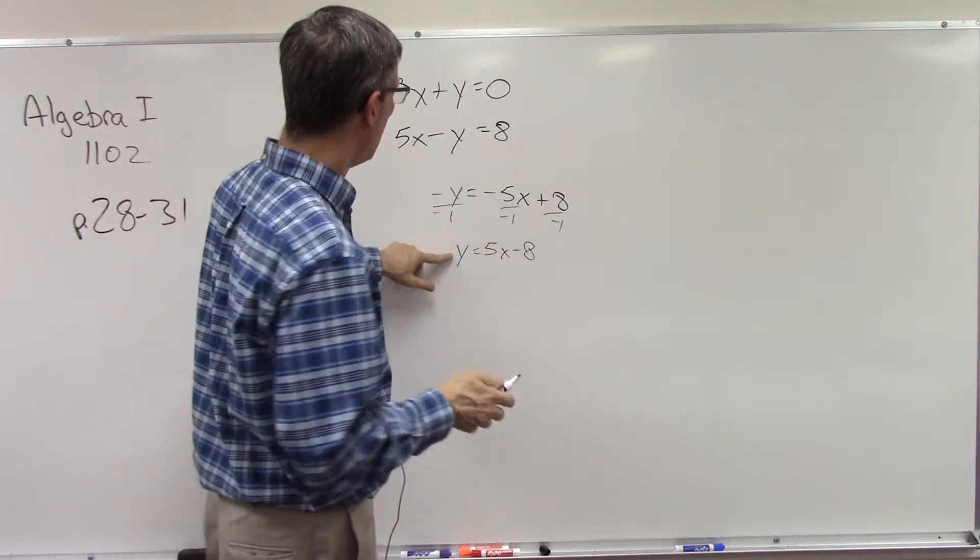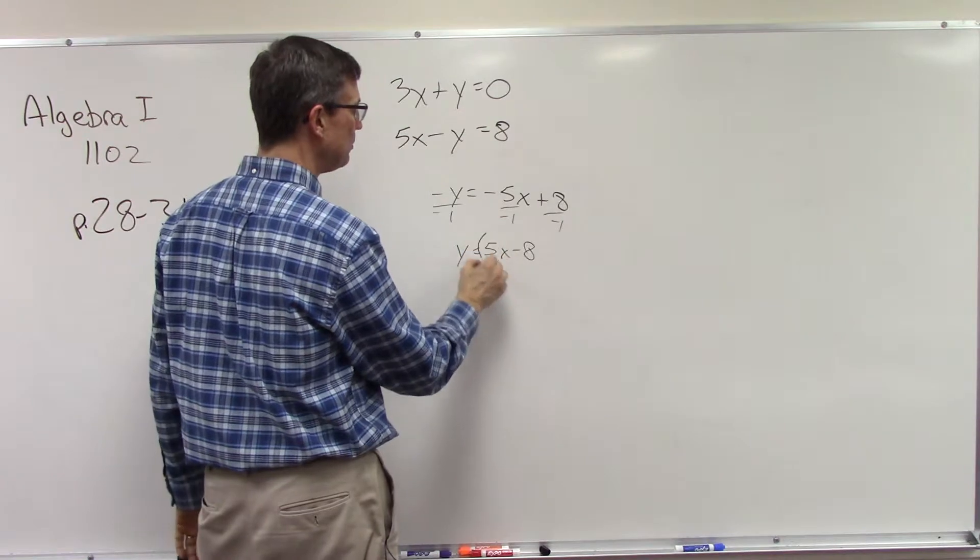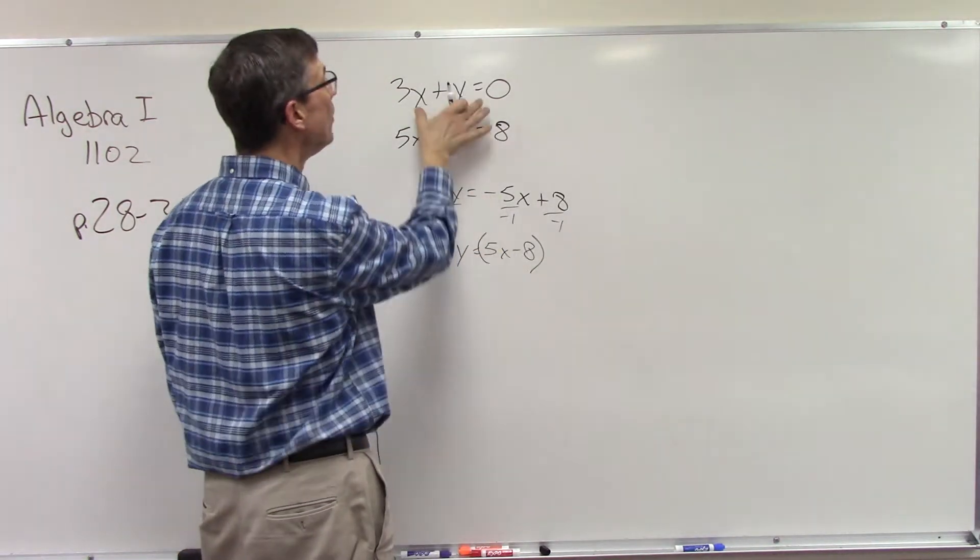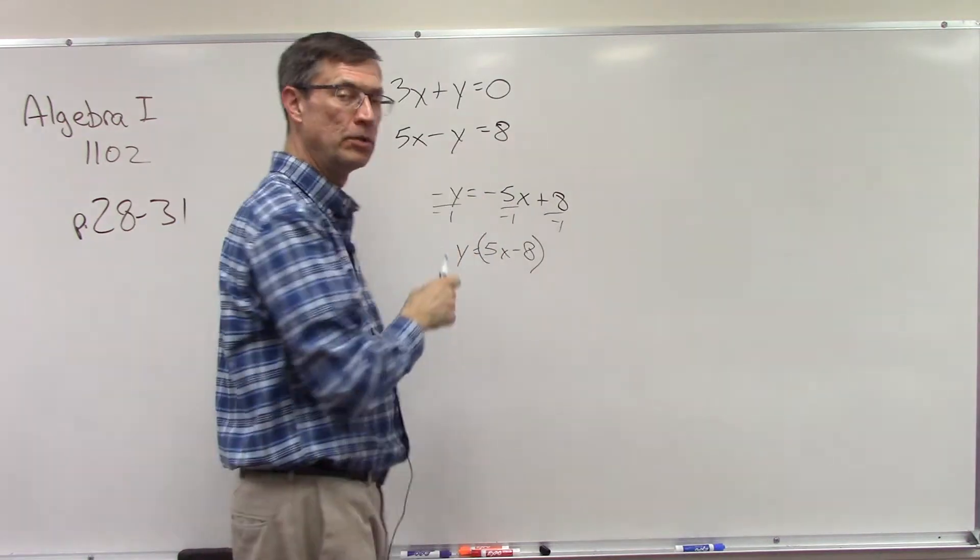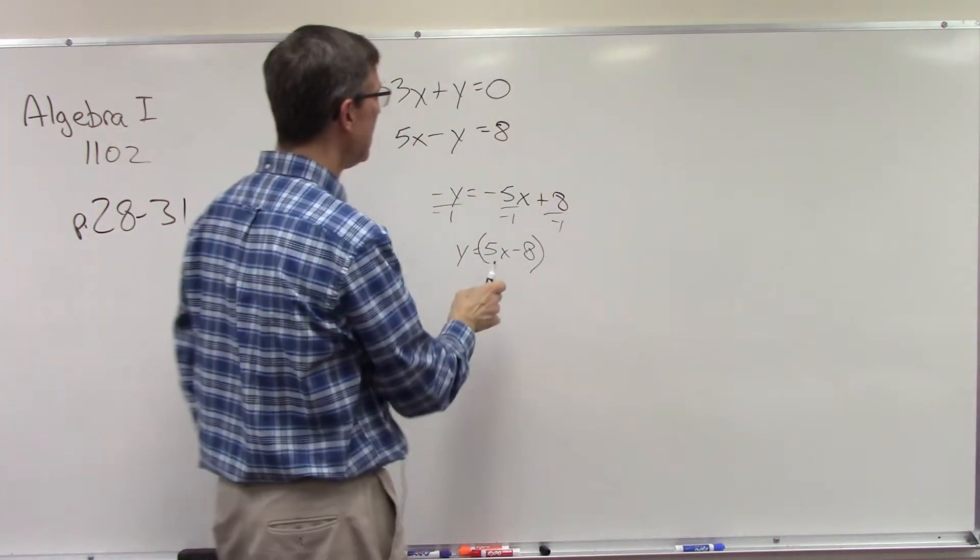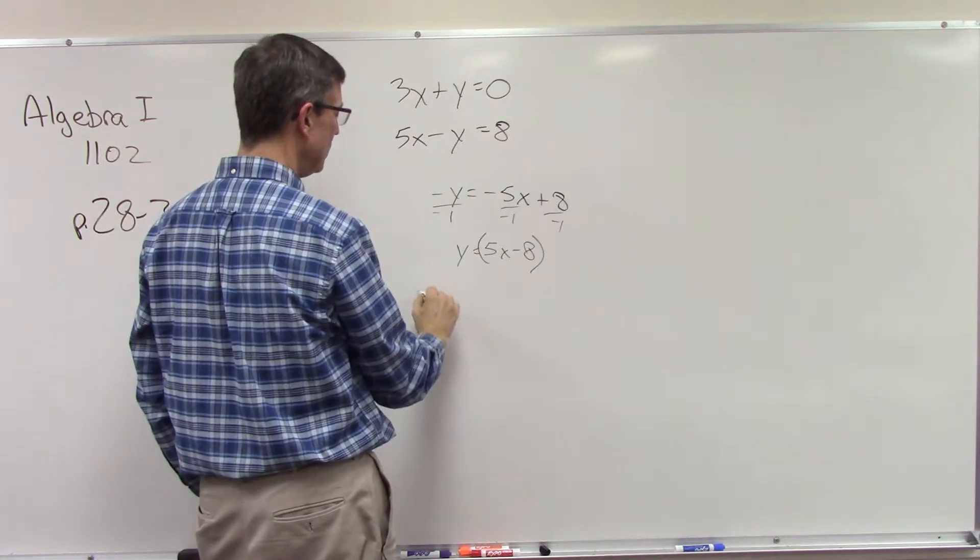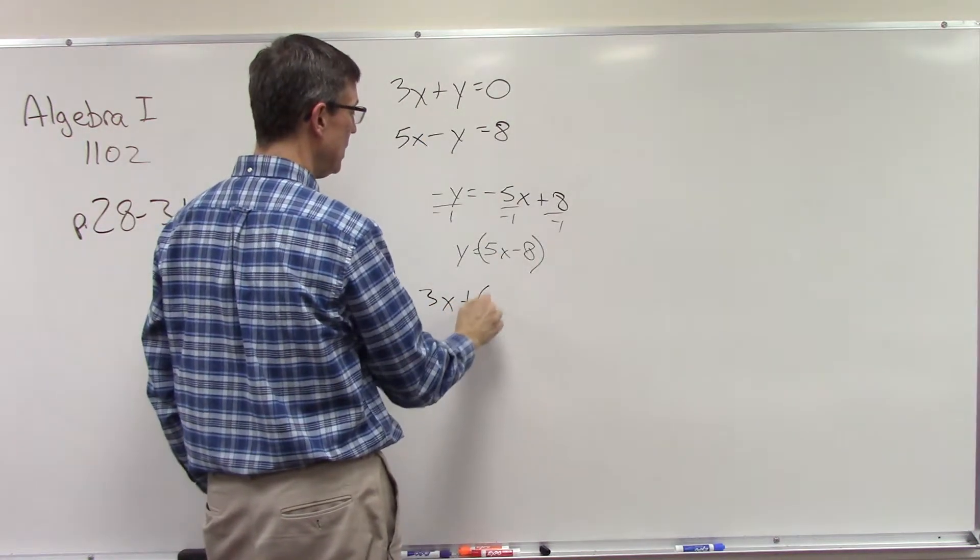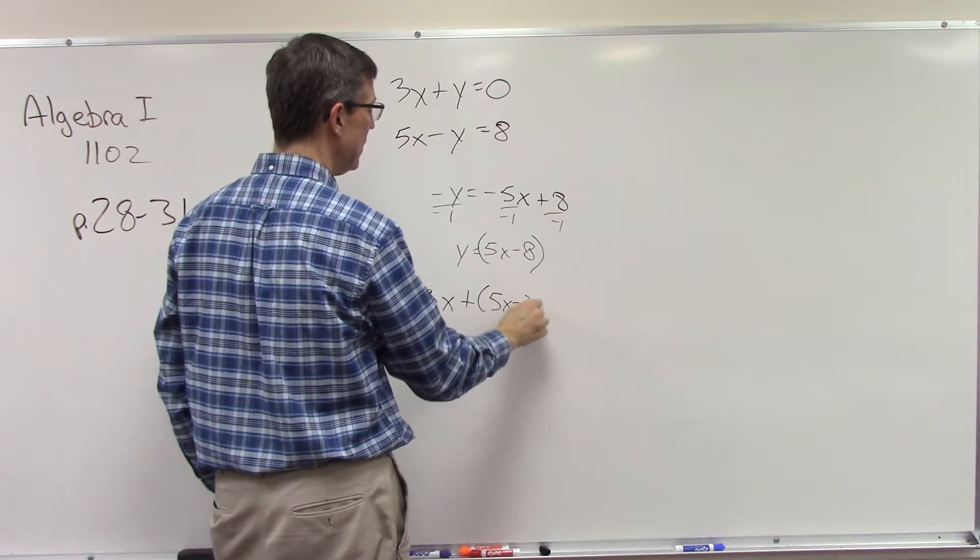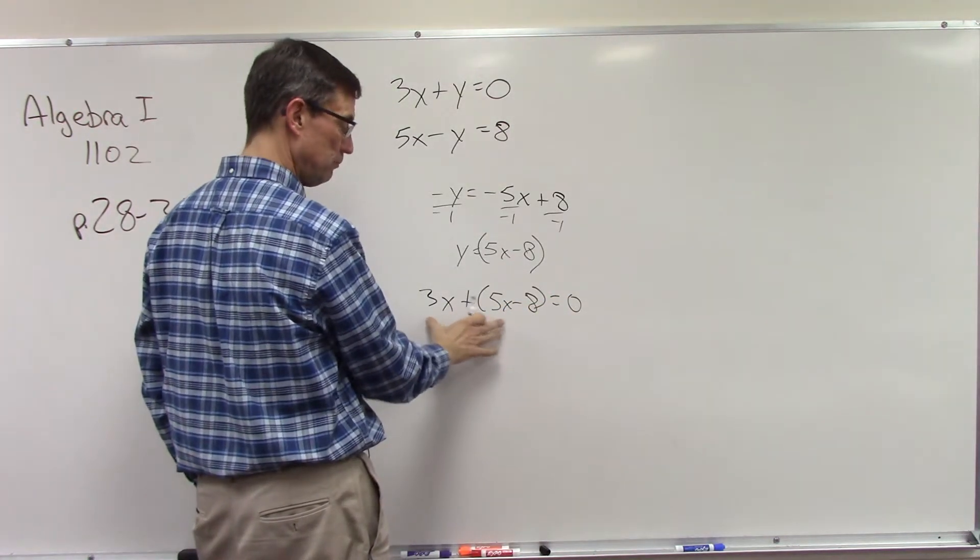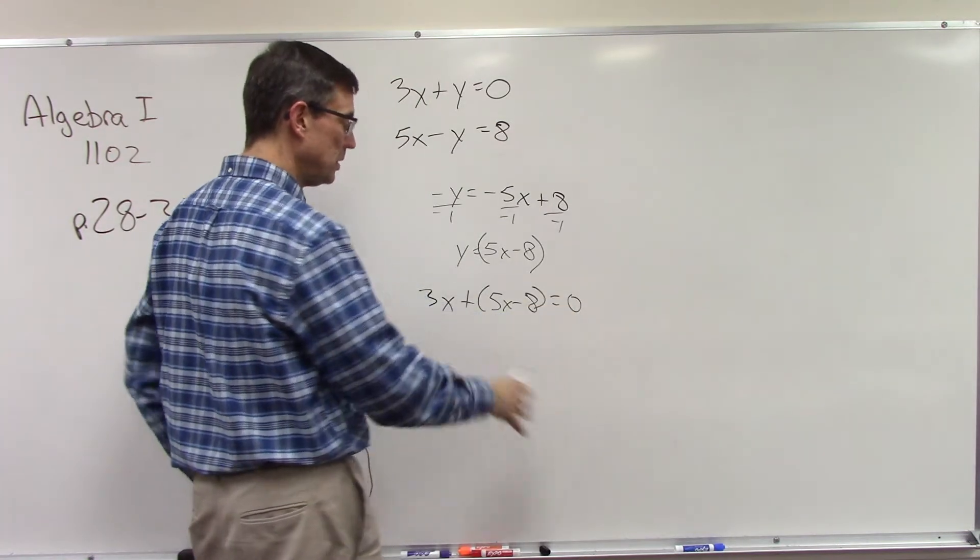Now that I know what y is, we're back to the step where we just put parentheses around it. Take the other equation—don't make the mistake of plugging it into the same one because that won't work. Take the other equation and plug it in place of y. So you'd have 3x plus 5x minus 8 equals 0. Now you can just combine like terms, move the 8 to the side, solve for x.